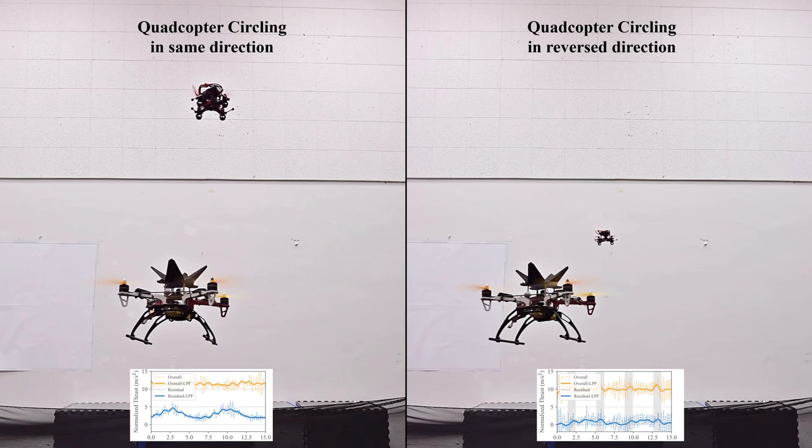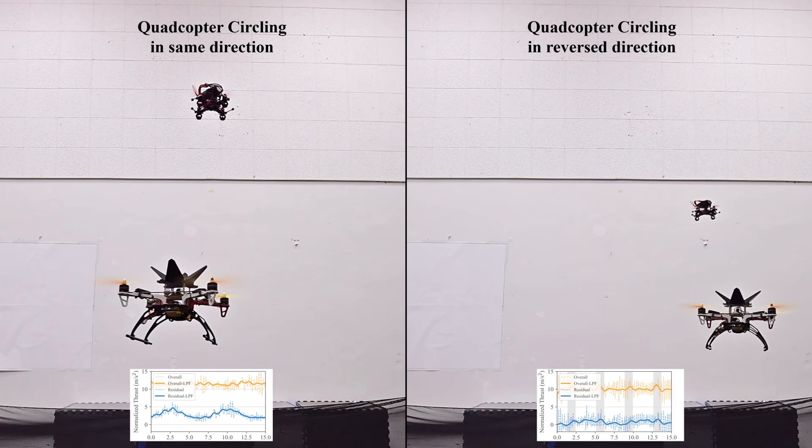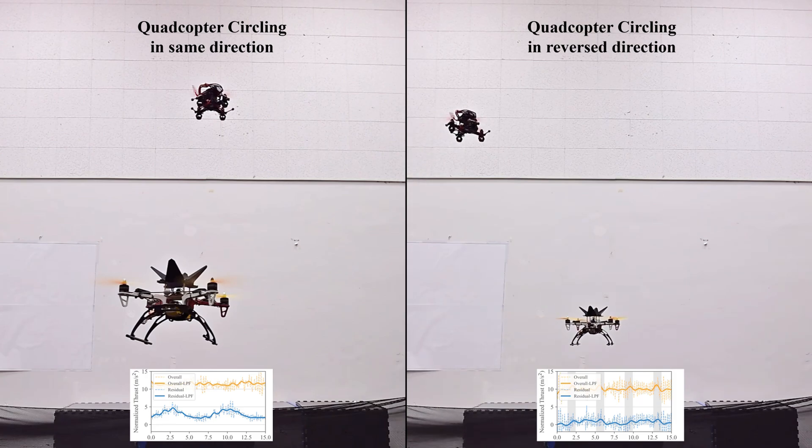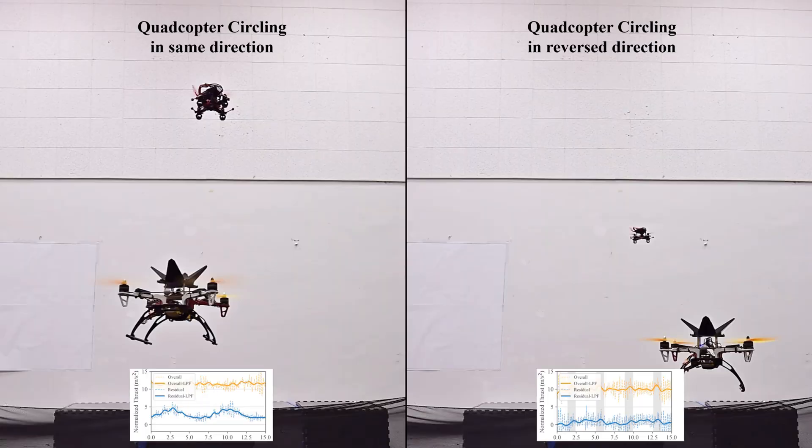While flying in the reversal direction, as shown in the figure, the gray area shows the time when the small quadcopter flies over the large one, and we can see the residual model will generate a short positive thrust for compensation each time the large quadcopter flies in the downward wind field.